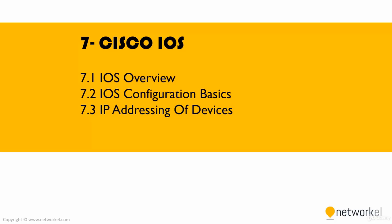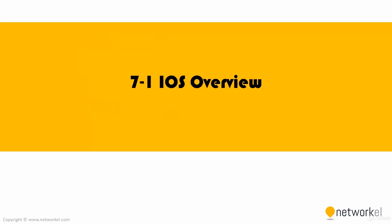We have three chapters. In the first chapter, we'll take a look at Cisco IOS overview. In the second chapter, we are going to talk about IOS configuration basics, and in the last chapter, we are going to talk about IP addressing of the devices.